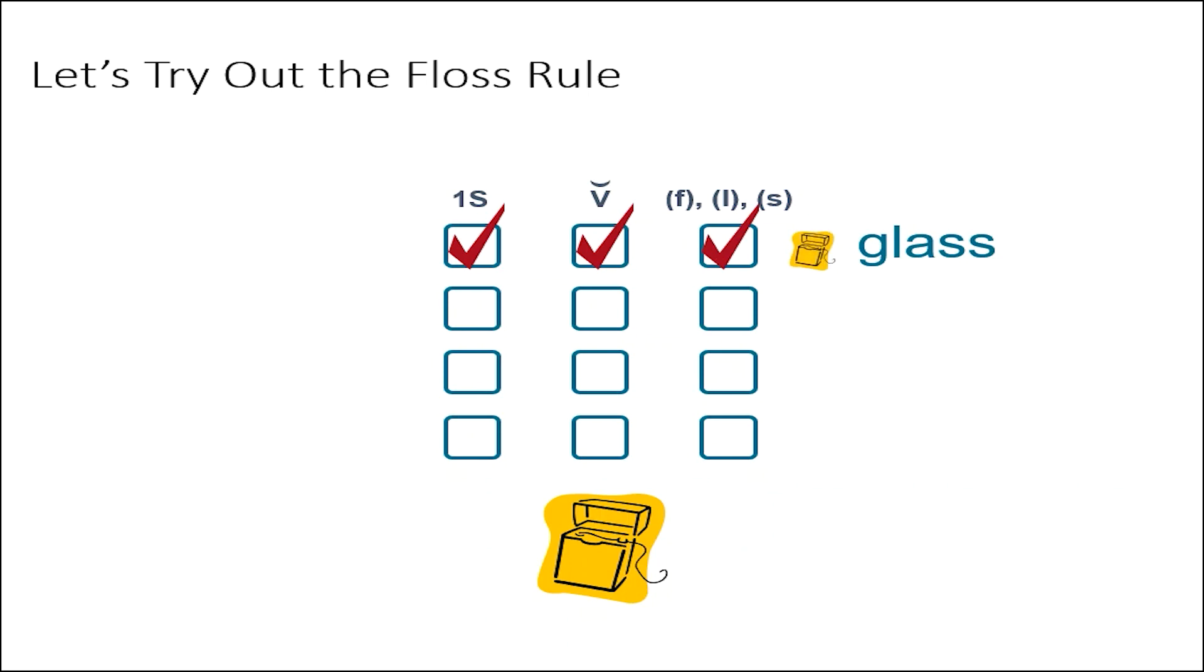The second word is shelf. Does it have all the checkpoints? Is it one syllable? Yes. Does it have a short vowel? Yes. Is final F, L, or S right after the short vowel? No. There are two sounds after the short vowel, L and F. Not one, so we would not double the final F when spelling this word.